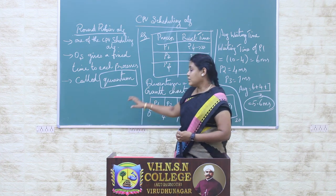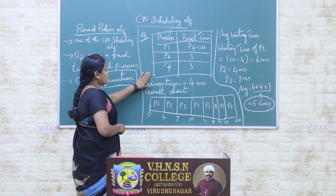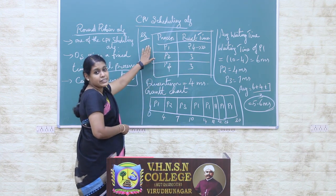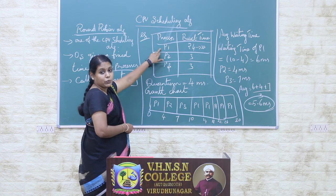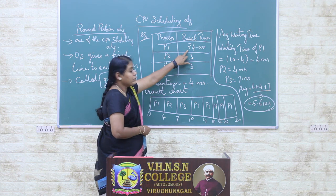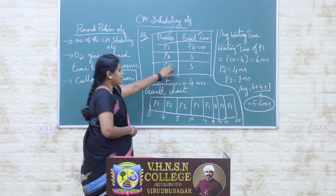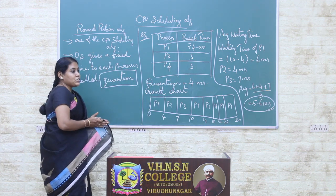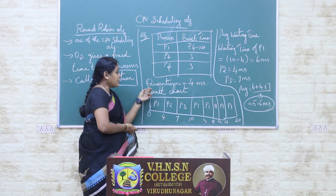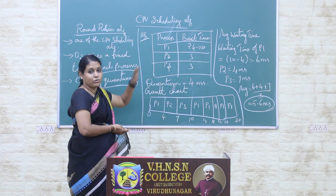Now we will see the principles of the Round Robin Scheduling Algorithm with an example. In this example, we have three processes: P1, P2, and P3. The burst time of P1 is 24 milliseconds, the burst time of P2 is 3 milliseconds, and the burst time of P3 is 3 milliseconds. The quantum period for this example is 4 milliseconds, so each process is allotted 4 milliseconds of CPU time per cycle.